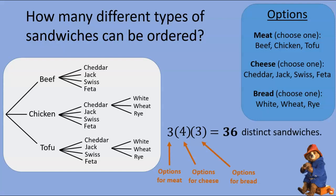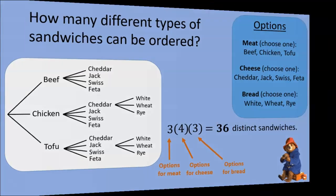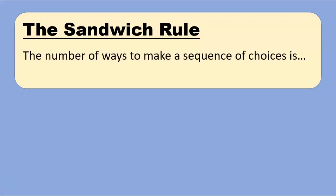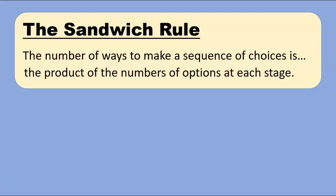From these examples we can abstract an important general principle, which normally goes by some title such as the fundamental principle of counting, but I just call it the sandwich rule. The sandwich rule states that the number of ways to make a sequence of choices is the product of the numbers of options at each stage. We've seen this in the context of sandwiches, but it works elsewhere.